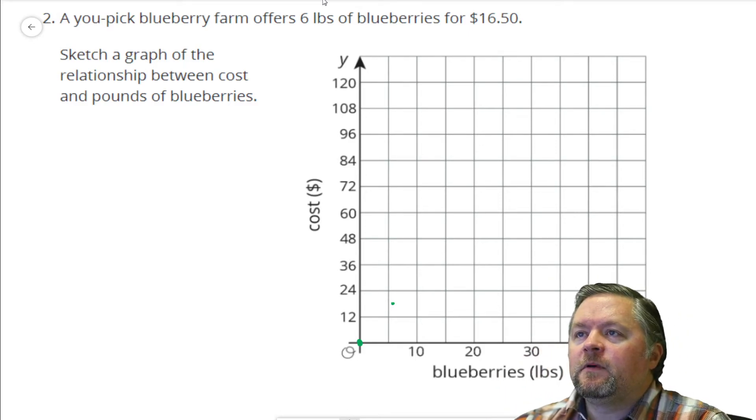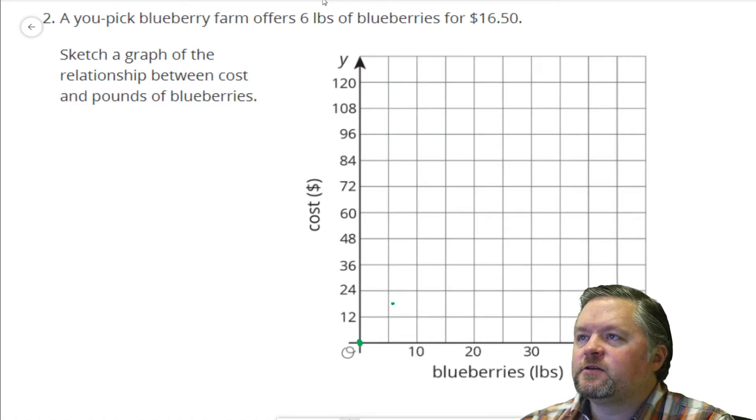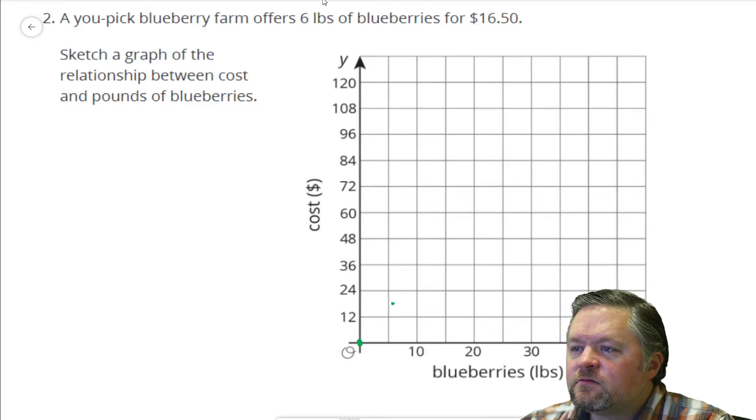What about if we bought 12 pounds of blueberries? We'd have to double this. 12 pounds of blueberries would be $33. 12 pounds of blueberries, $33, something like that.